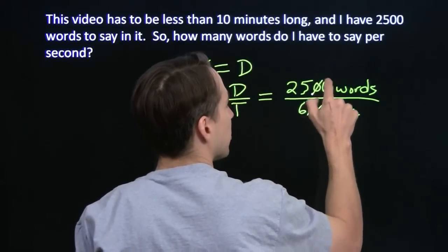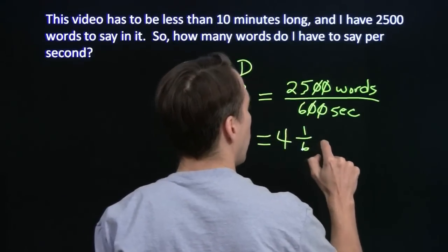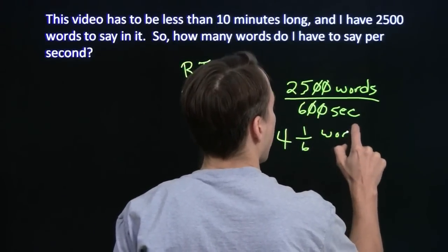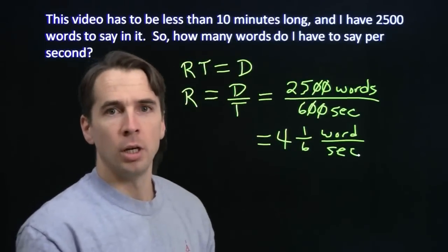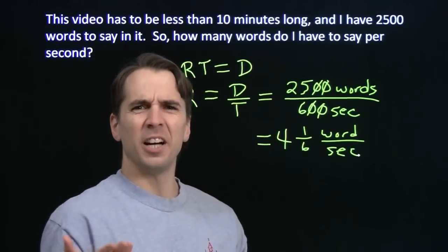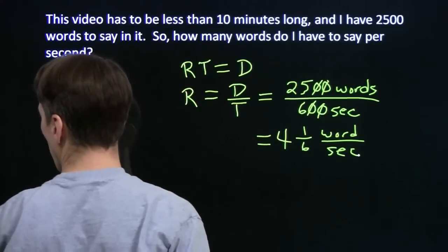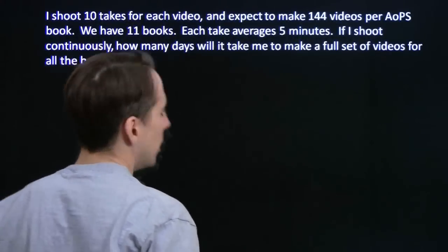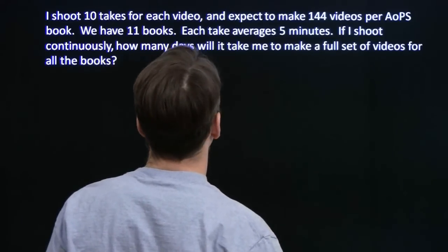Take out a couple factors of 10. I have 25 over 6, which is 4 and a sixth words per second. That means I need to talk a lot faster. Well, or maybe I just need to find a smarter way to say things and then speak in a more normal pace. All right, one more cup of coffee here.